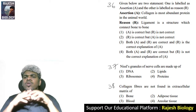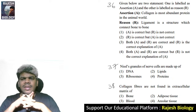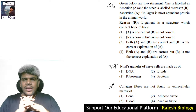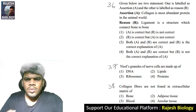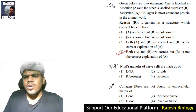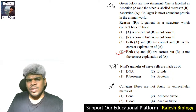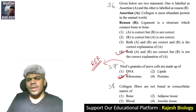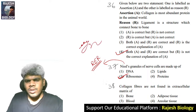Thirty-sixth question: assertion — collagen is the most abundant protein in the animal world — correct. Reason — ligament is a structure which connects bone to bone — correct, but it is not a correct explanation of the assertion. So both are correct but R is not the correct explanation of A. Thirty-seventh question: Nissl granules of nerve cells are made up of ribosomes because Nissl granules represent the rough endoplasmic reticulum, and rough ER has ribosomes — so ribosomes is the right answer.